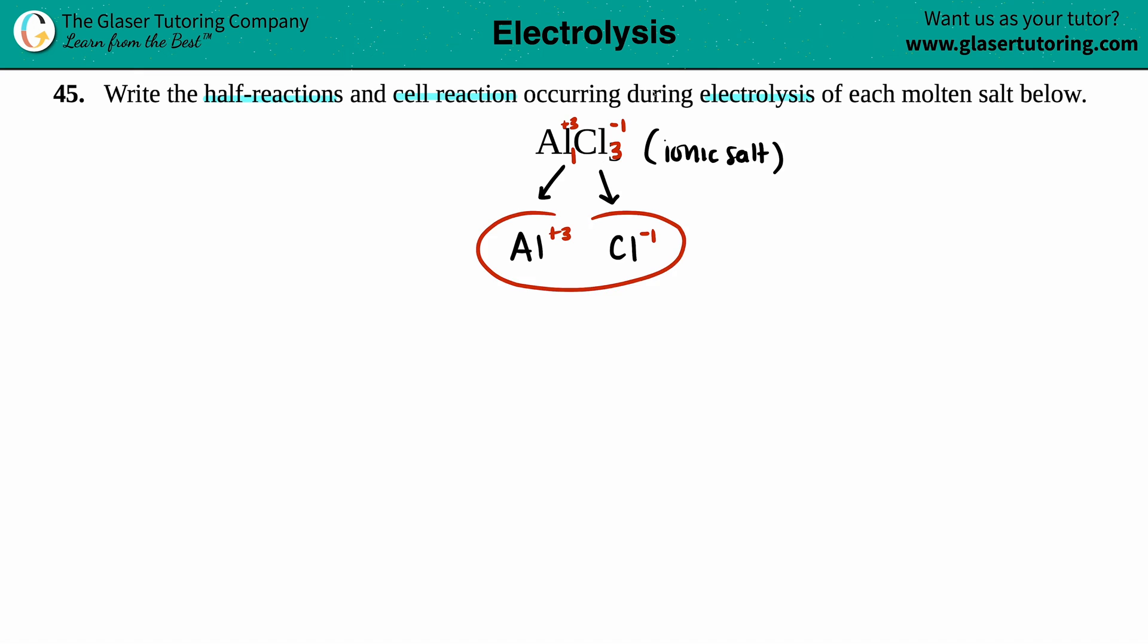These are the two ions that I start with for my half reaction. So I have aluminum three plus and Cl minus one. The idea is that whatever your ion is, you're going to return it back to its original state without a charge. So aluminum is just going to go back to being Al and the chlorine is just going to go back to being Cl.